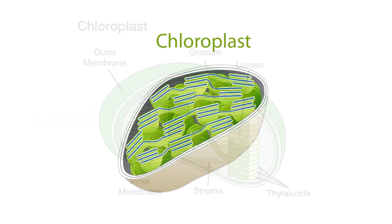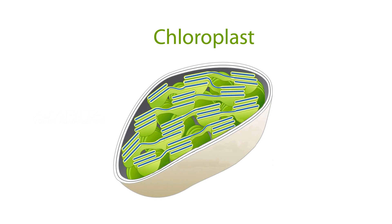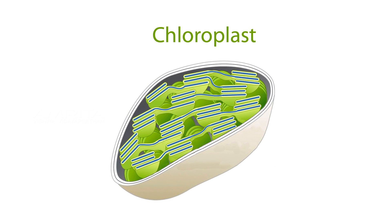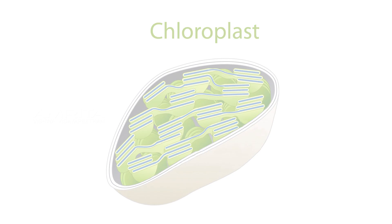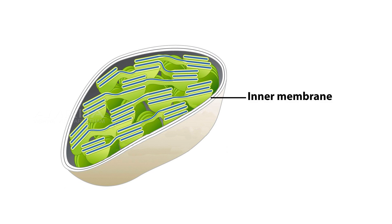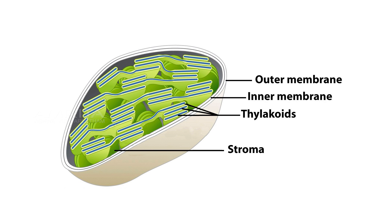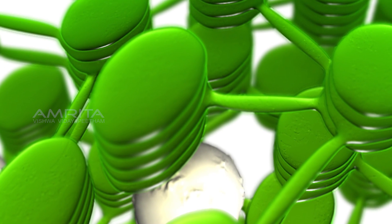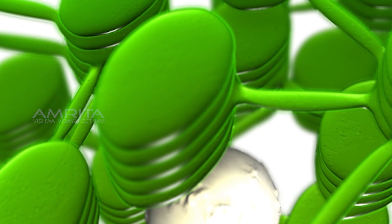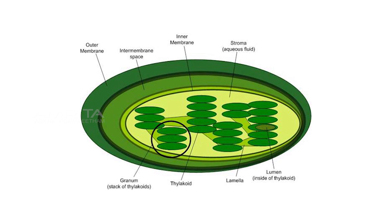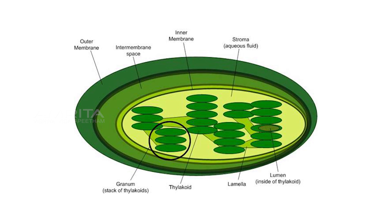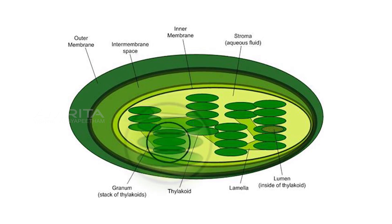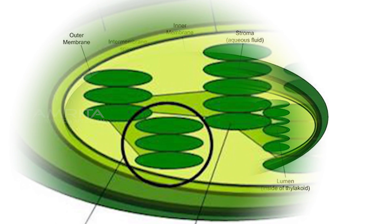The chloroplast is divided into three compartments bounded by three membrane systems: an inter-membrane space between the inner and outer membranes, the stroma, and the thylakoid lumen. Chloroplasts contain many thylakoids which look like a stack of coins. Thylakoids contain flattened disc-like structures called grana, and the chlorophyll is present inside these grana.